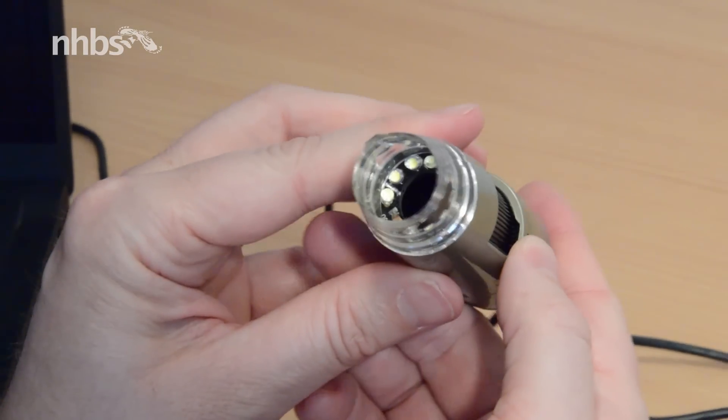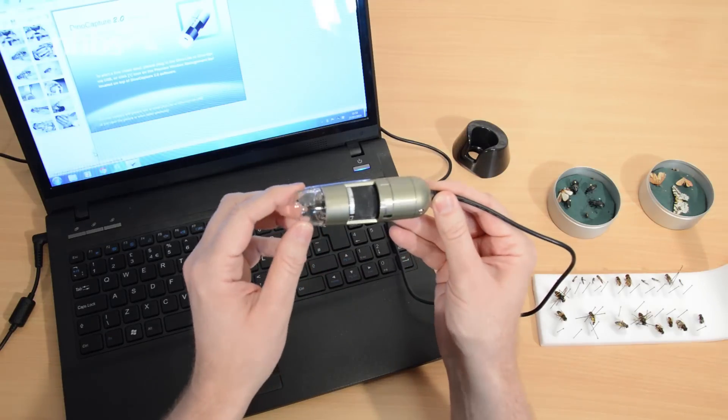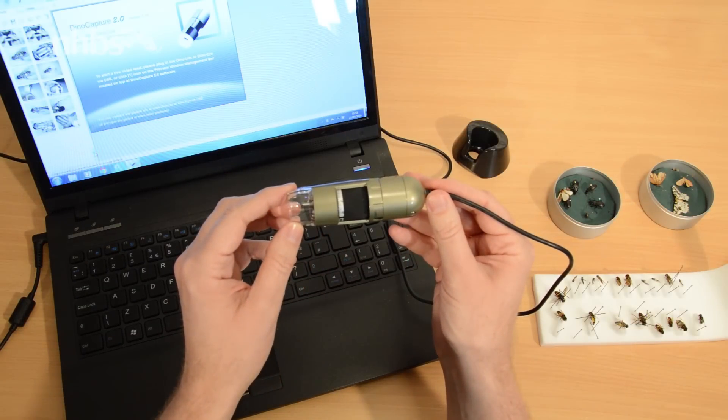The front has 8 LEDs to help with illumination, and this can be turned on and off using the accompanying software, DinoCapture 2.0.